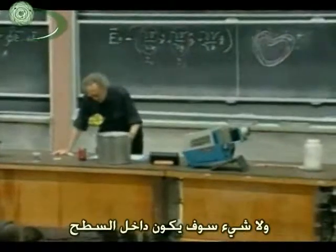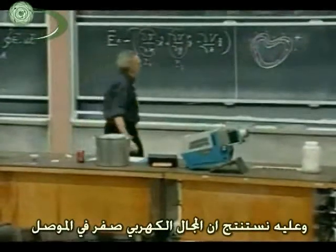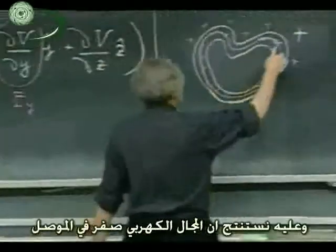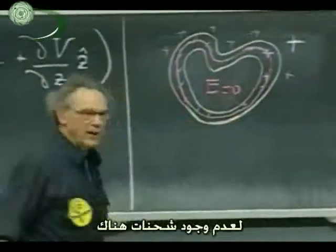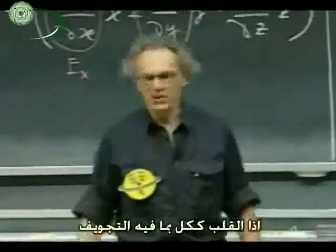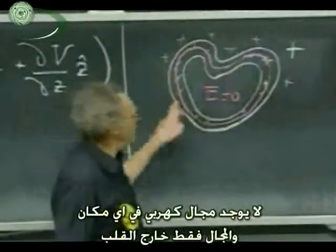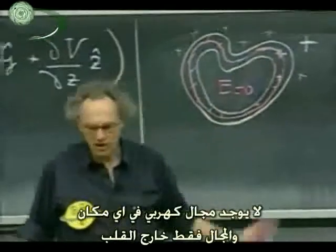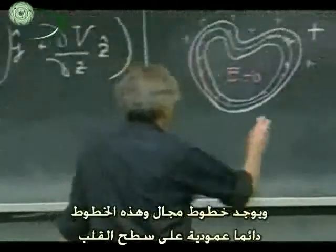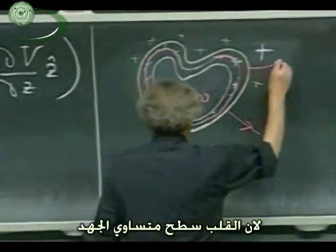Nothing will go to the inner surface. The conclusion then is that the electric field is zero in the conductor, but the electric field is also zero in this opening — there is never any charge there. The whole heart, including the cavity, is at equipotential. There's never any electric field anywhere inside. There are only electric fields outside the heart, and these field lines are everywhere perpendicular to the surface of the heart because the heart is at equipotential.